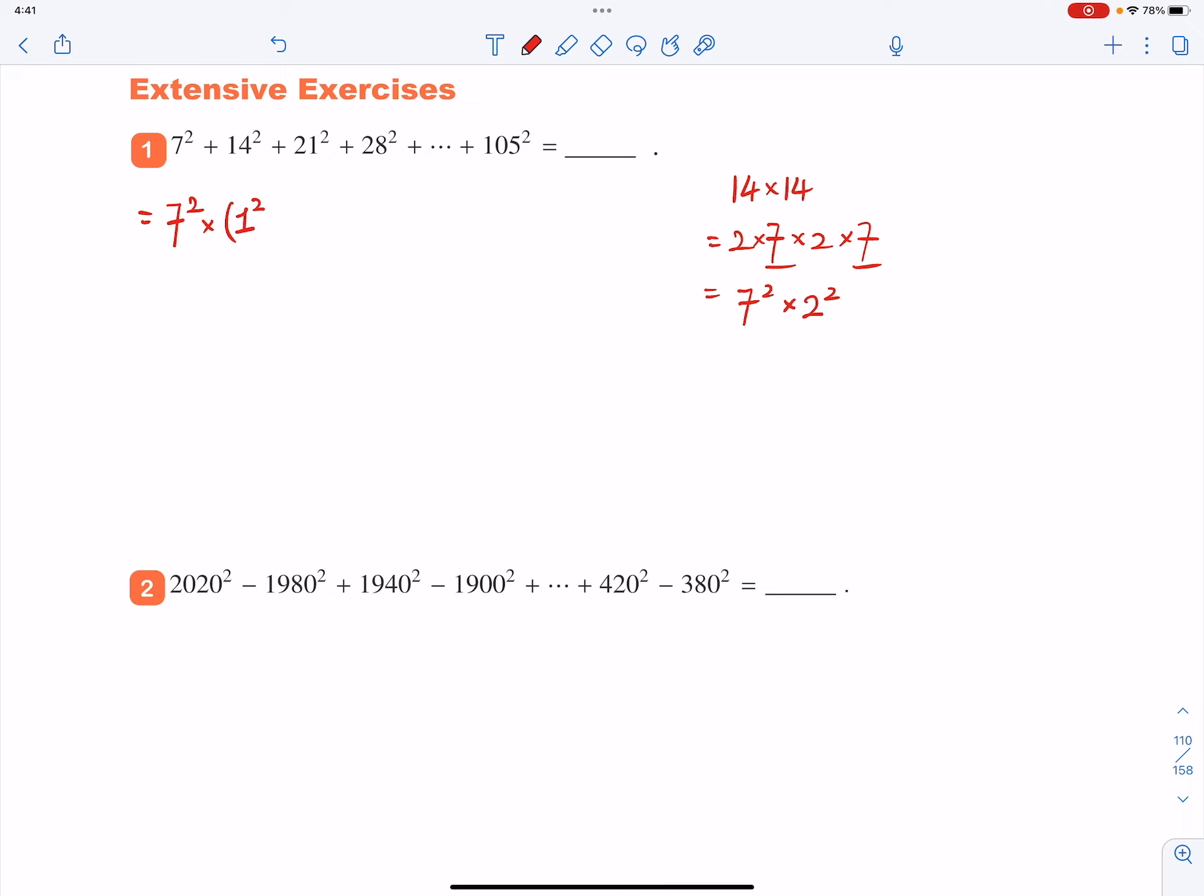So if you find the common factor 7 squared and extract that out, you're going to get this 2 squared left. Then you see that 21 squared equals 7 squared times 3 squared. So you're adding 3 squared to that, and all the way to 105 squared.